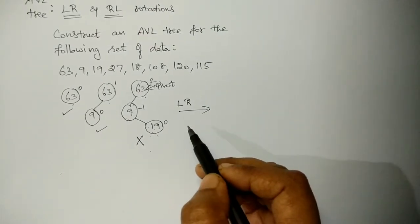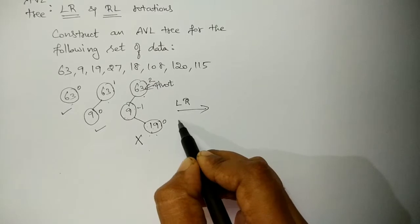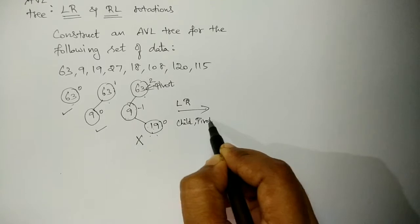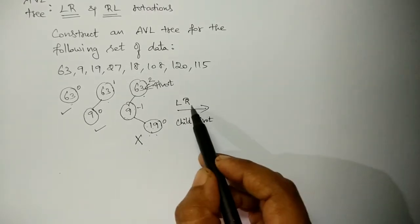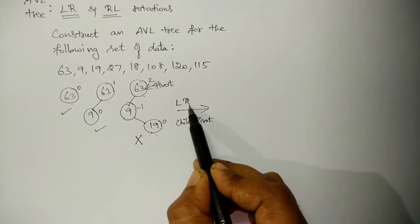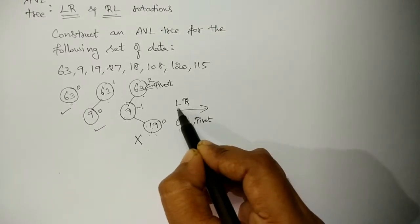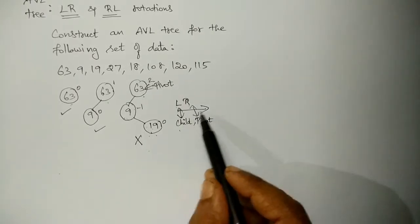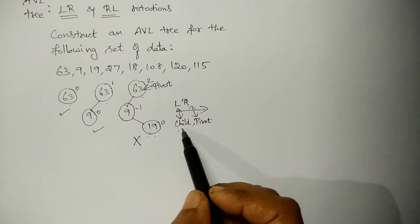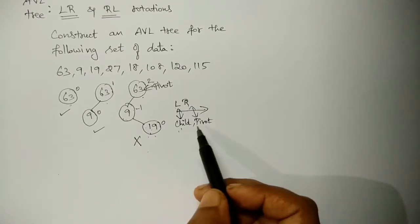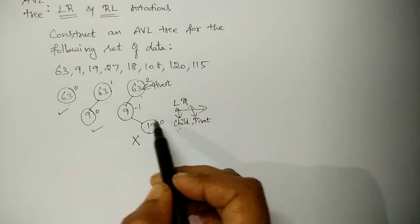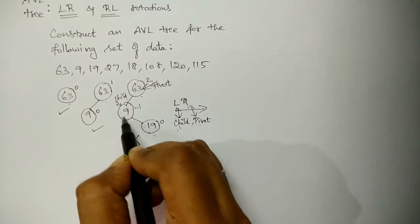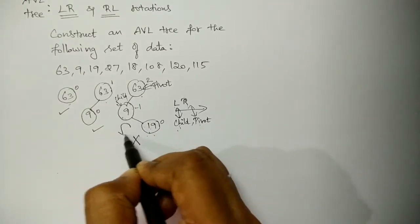LR comes under double rotation. In case of double rotation, first the child should be rotated and then the pivot node should be rotated. LR rotation means L represents left and R represents right. So the child should be rotated to the left side and the pivot should be rotated to the right side. This is how we perform the double rotation. First I rotate the child node, and from that intermediate result, I rotate the pivot node. The first rotation is the child to be rotated left side — this is the child node.